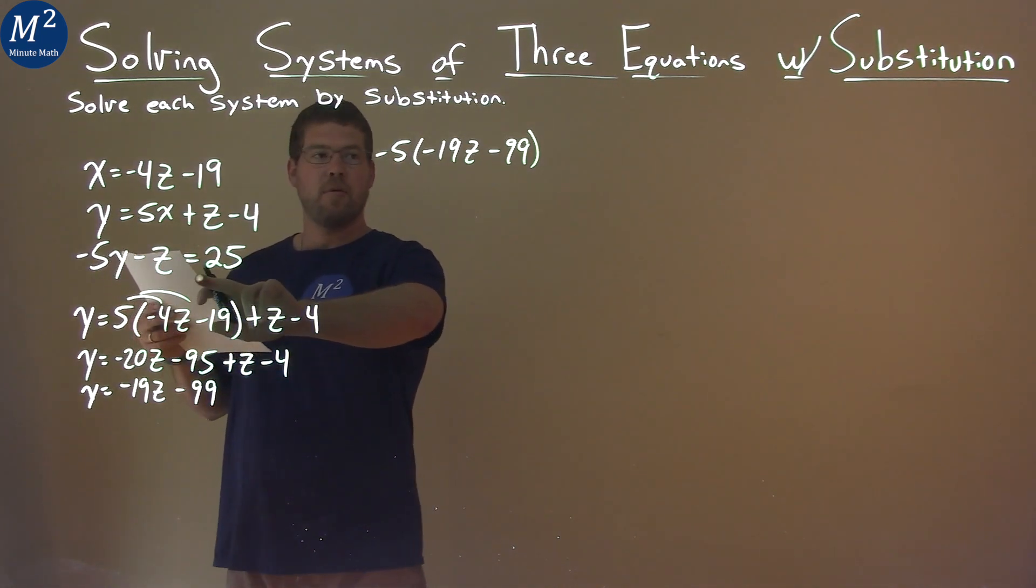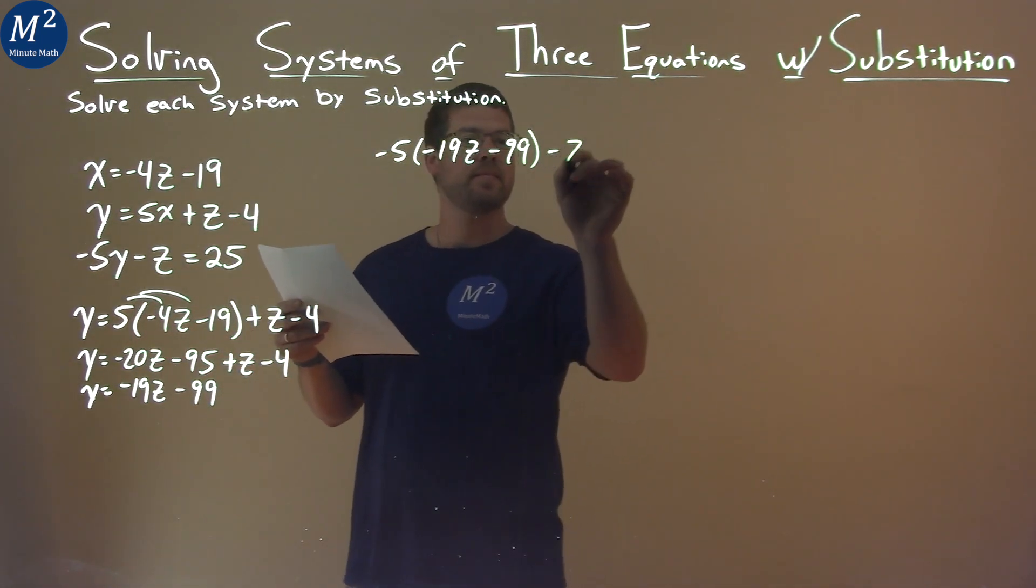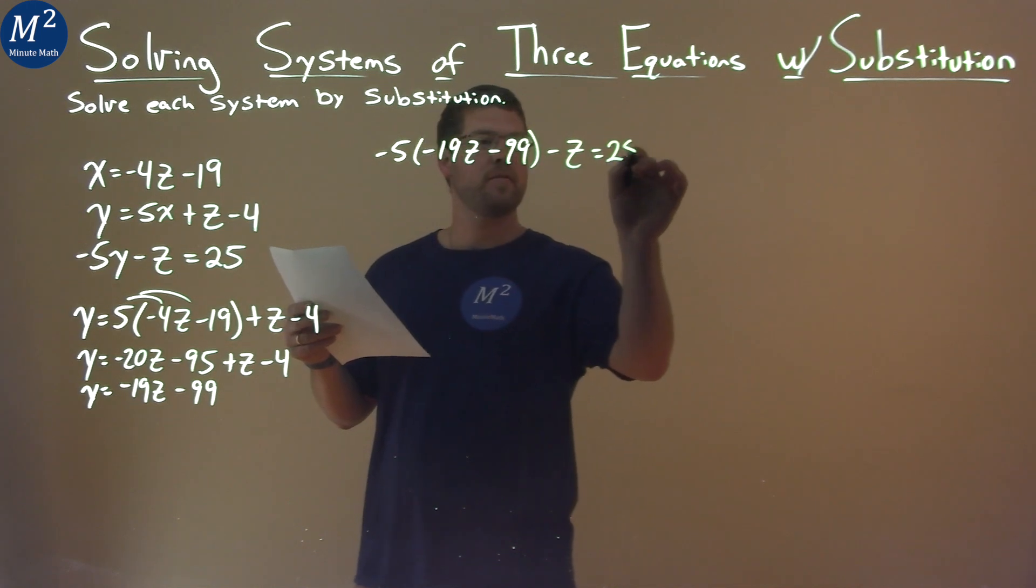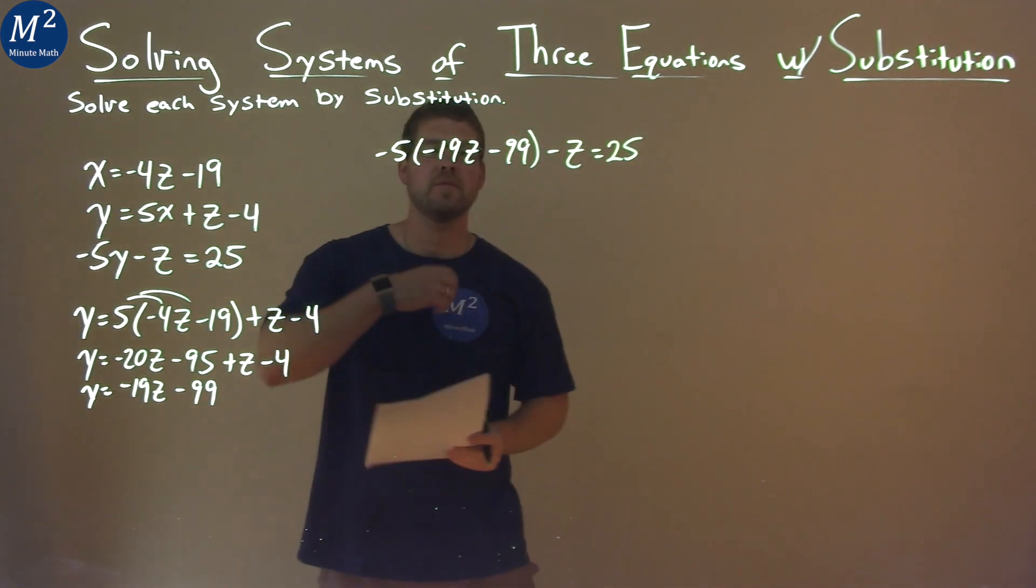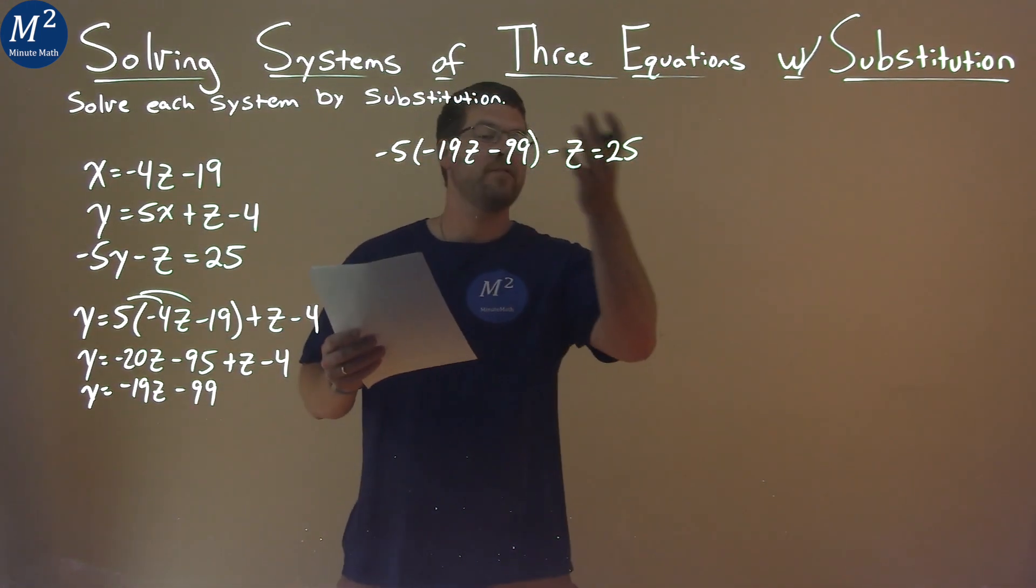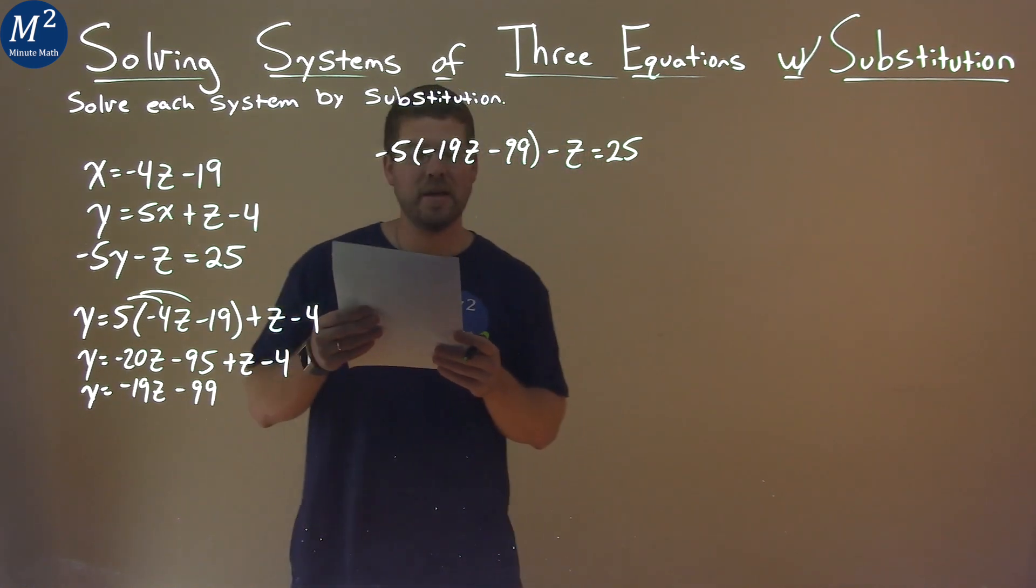Then we have a minus z here equals positive 25. And the point of this, you can see that z is the only variable in this equation, and now we can solve.